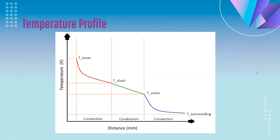This figure shows the temperature profile for our problem statement. The vertical axis is temperature and the horizontal axis is the distance from the skin, increasing away from the skin. The red curve represents convection between skin and clothes, the green curve is conduction in the fabric layer, and the blue curve is convection from clothes to the surroundings.